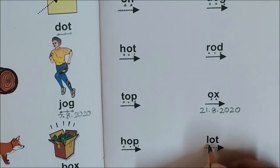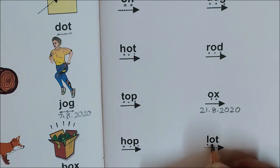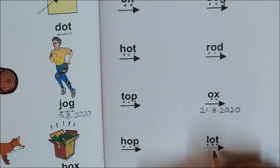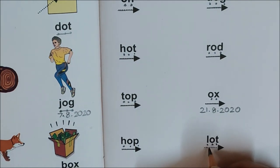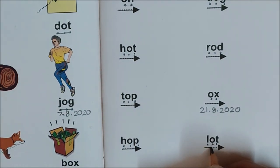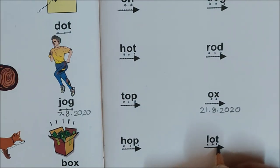Children, what is the first sound in this word? L. What is the next sound? O. And what is the last sound? T. Now join and read. L. O. T. Lot. L. O. T. Lot.